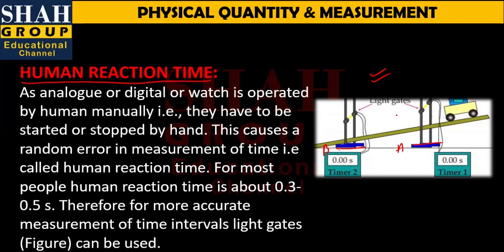What is human reaction time? Basically, when a car enters, someone starts the stopwatch; when the car exits through the second gate, someone stops it. There can be a delay — the person might start too early or take a little time, which causes an error in measurement. This error is what we call human reaction time.